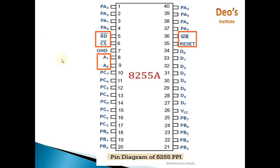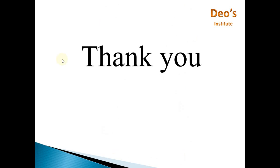A0 and A1 pins are responsible for selecting specific ports — Port A, Port B, or Port C — from the three different IO ports. This is all about the pin diagram of 8255 PPI, the programmable peripheral interface. Thank you for watching. If you like the video, please press the like button, and if you have any queries you can ask through the comment section.